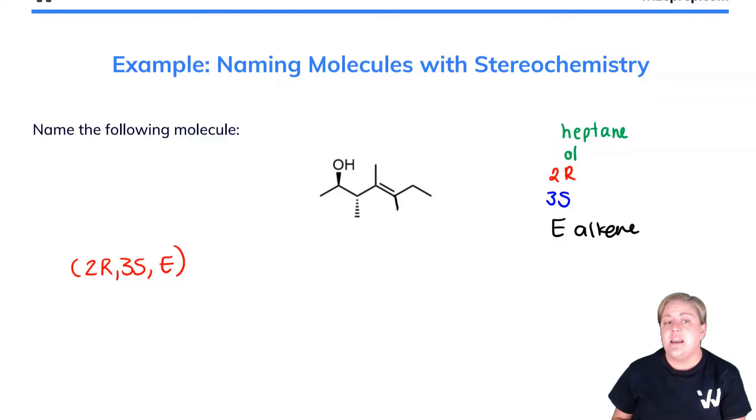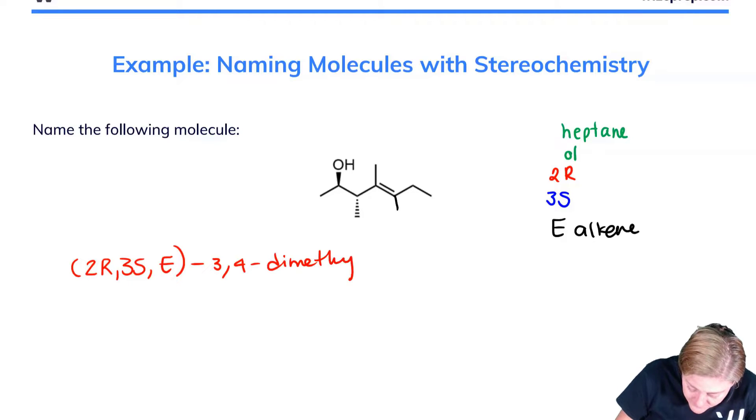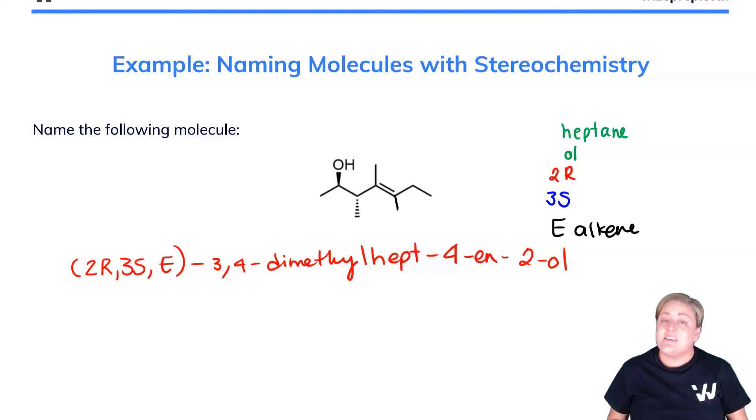Then we need to name the types of functional groups and decorations present. We have a 3,4-dimethyl for the two methyl groups on the third and fourth carbons. We have a hept for the seven-carbon chain with an alkene at the four position and an alcohol at the second. And that is a really long name, but it is correct.